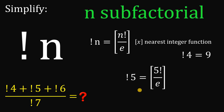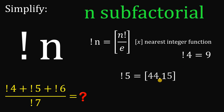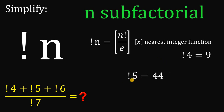For 5 sub-factorial, it equals the nearest integer value of 5 factorial over e. Since 5 factorial is 120 and e is 2.718, we get 120 divided by 2.718, which gives approximately 44.15. The nearest integer from 44.15 is 44, so 5 sub-factorial equals 44.